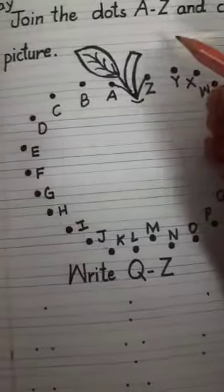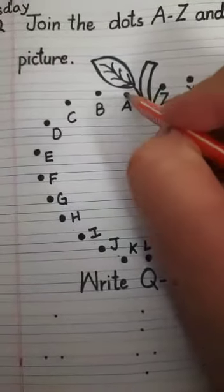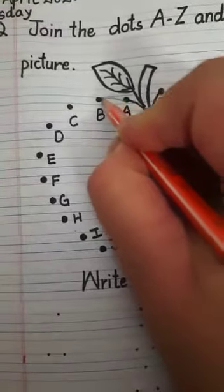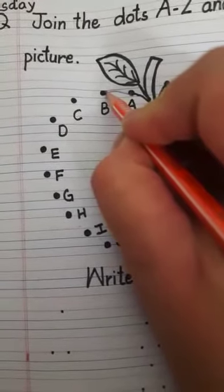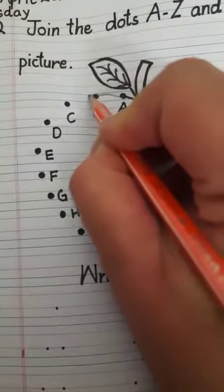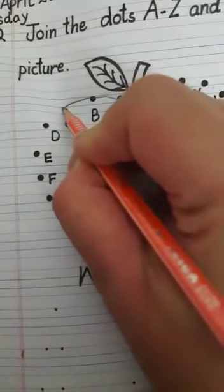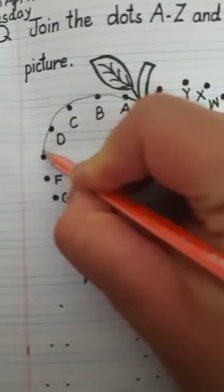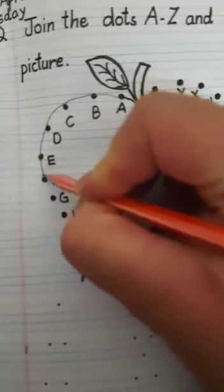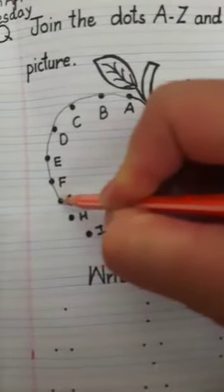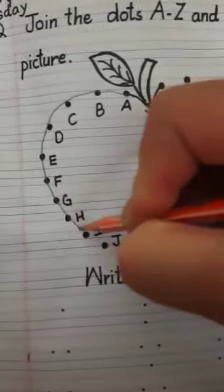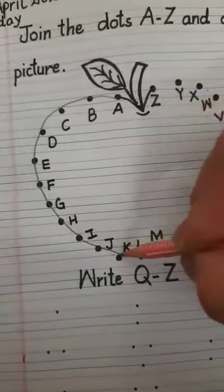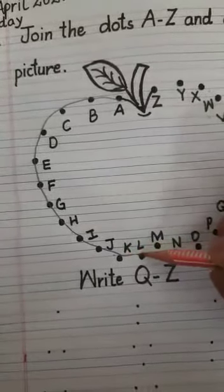Let's see kya banta hai picture mein. Start from here. Join A to B. Don't move the pencil. Sorry, don't leave the pencil and move smoothly. B C D E F G H I J K L M